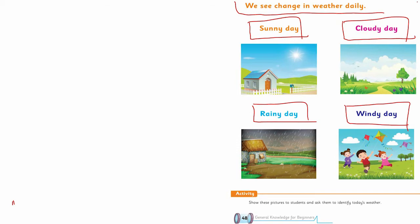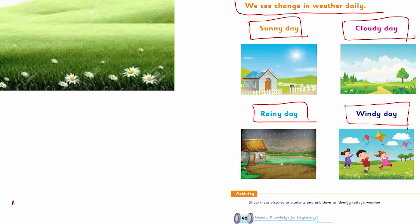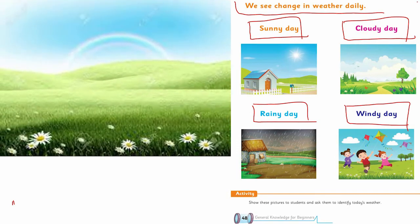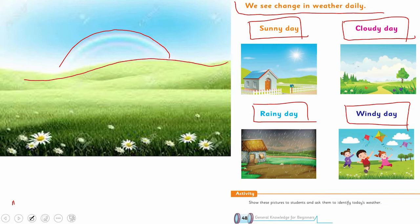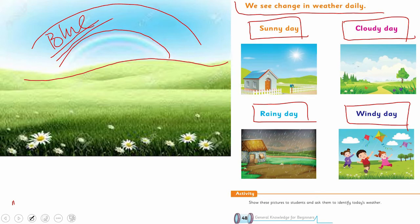See the first picture. What is this? You can see the sun, there is light, and the sky is blue — saaf asman aapko nazar aa raha hai. So this is called a sunny day.